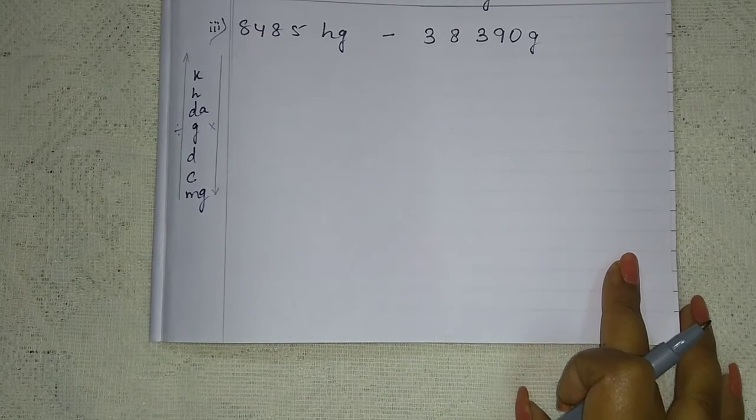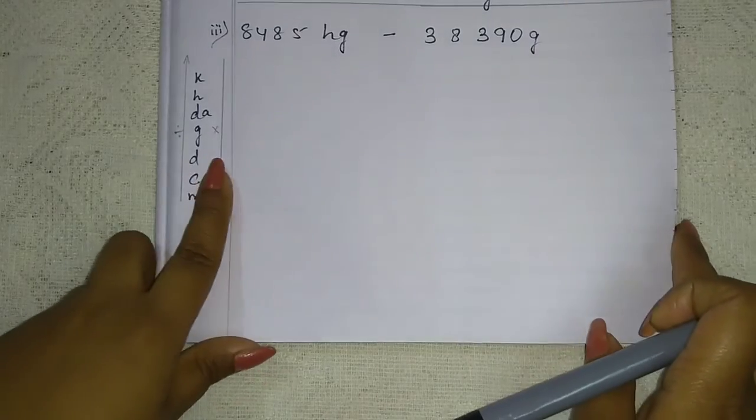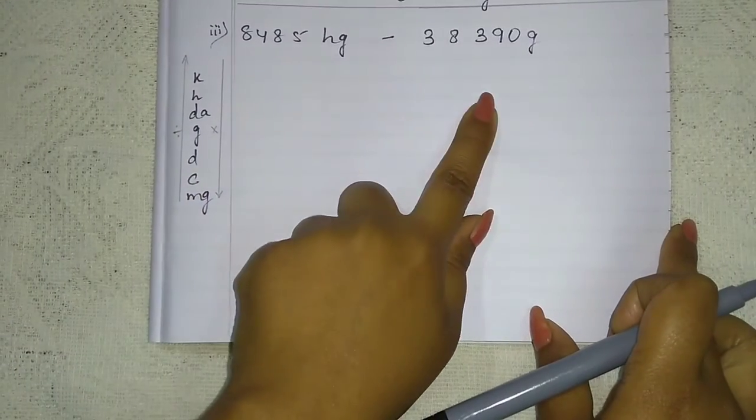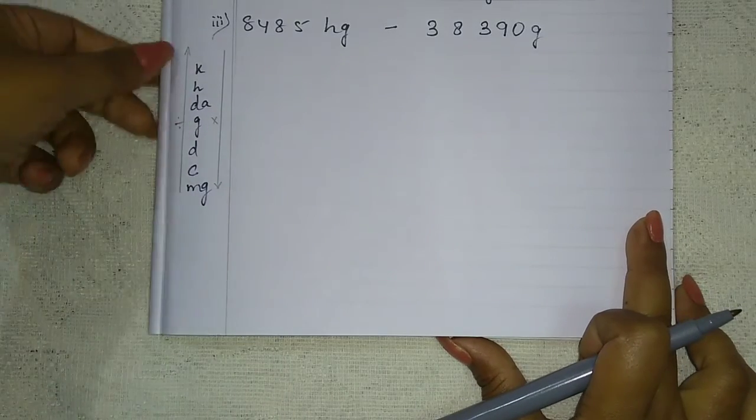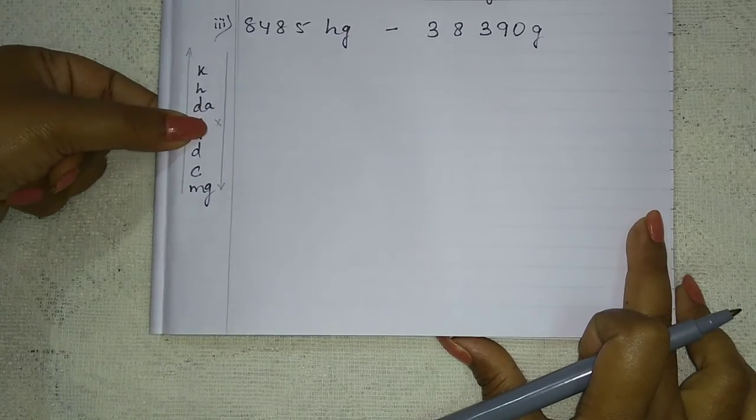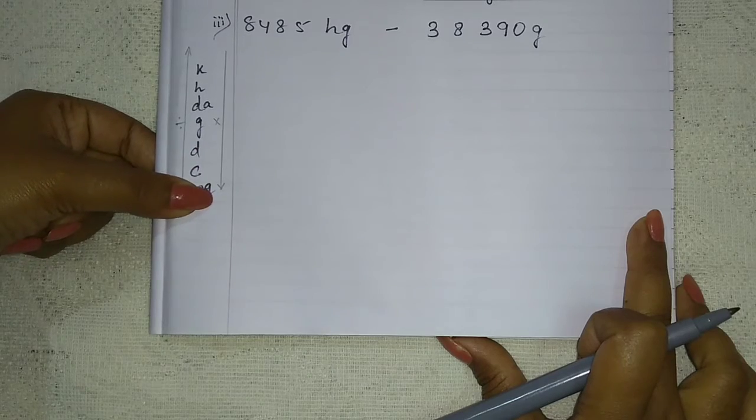Again different units, different units can't be subtracted. So for that, what we have to do? Your table is the same: kilo, hecta, deca, gram, deci, centi, milligram. Okay?